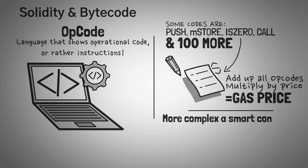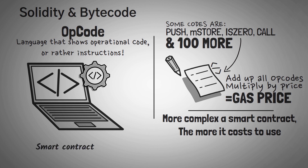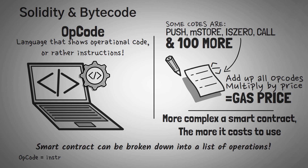The more complex a smart contract is, the more it costs to use it, because you're making the EVM do more work. Each smart contract can be broken down into a list of operations, which can be named by their opcode names. Also, some opcodes are more expensive than others, and some opcodes are more common than others.